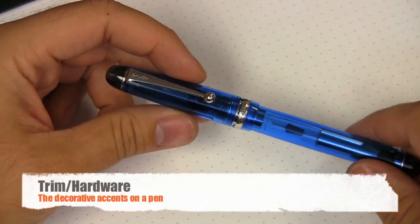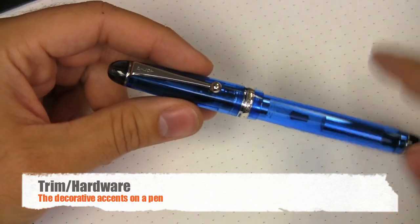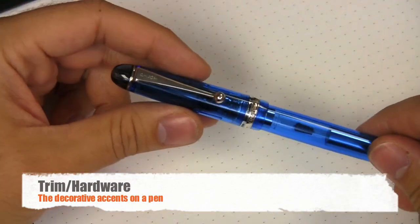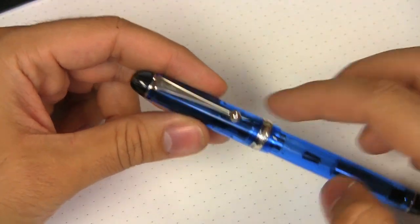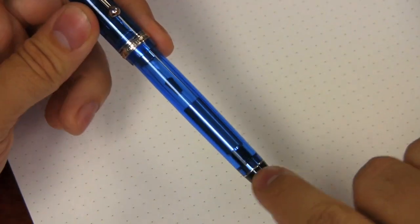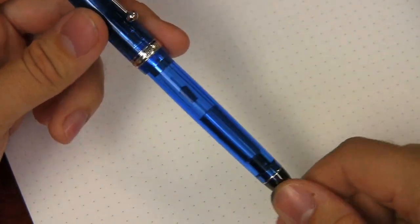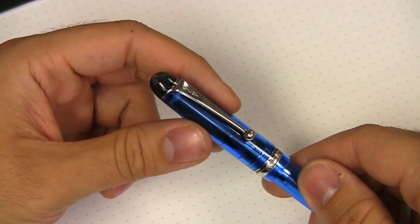Trim or hardware generally refers to any decorative accents to the pen such as the clip, the center band, any other decorative rings that you may have on there. That is usually called the trim or the hardware.